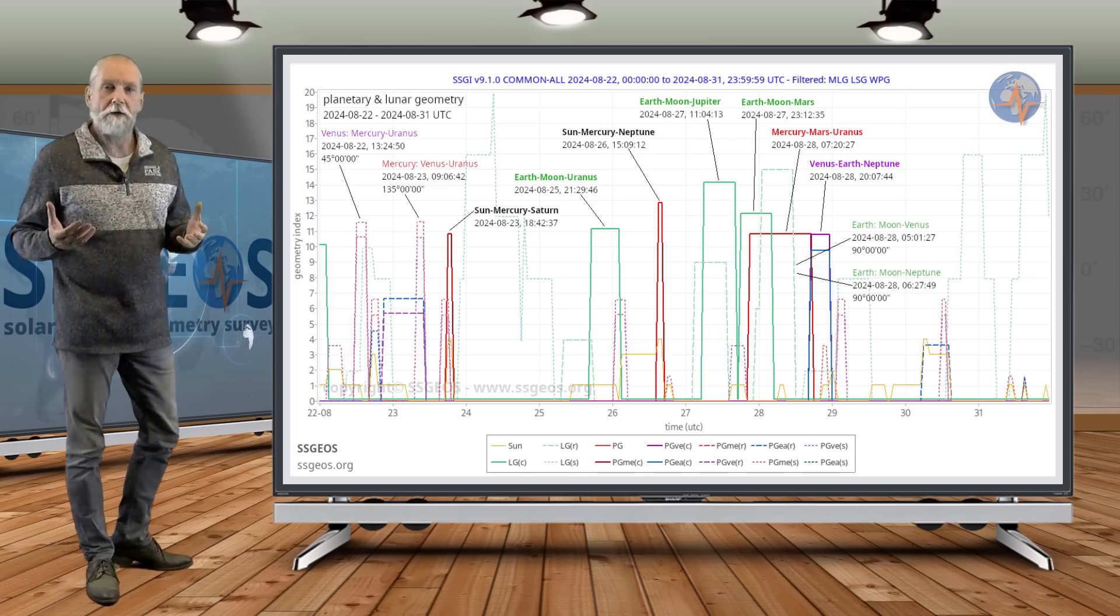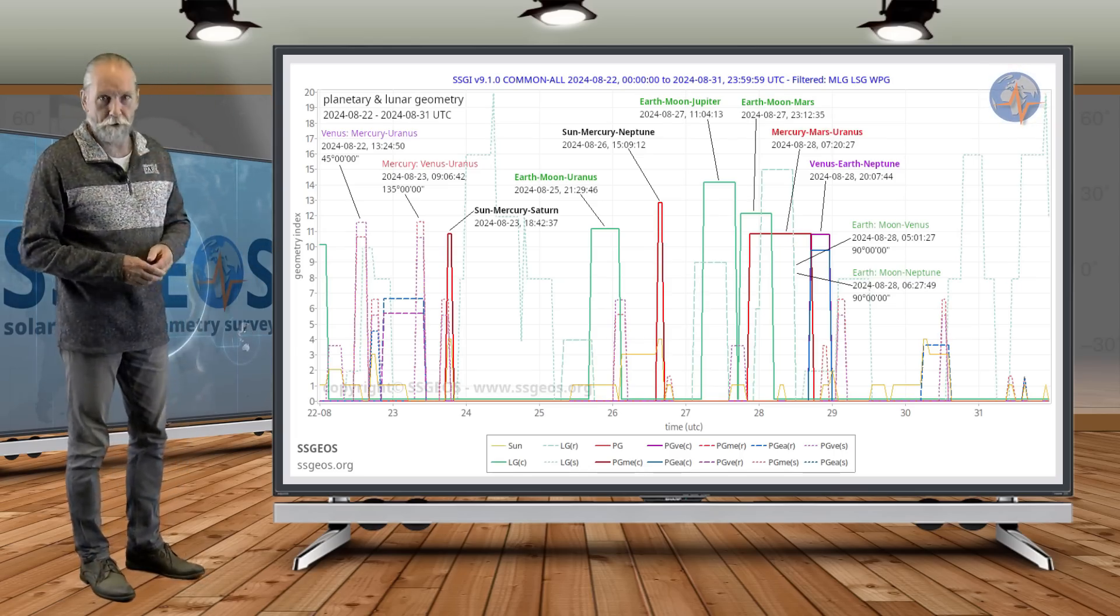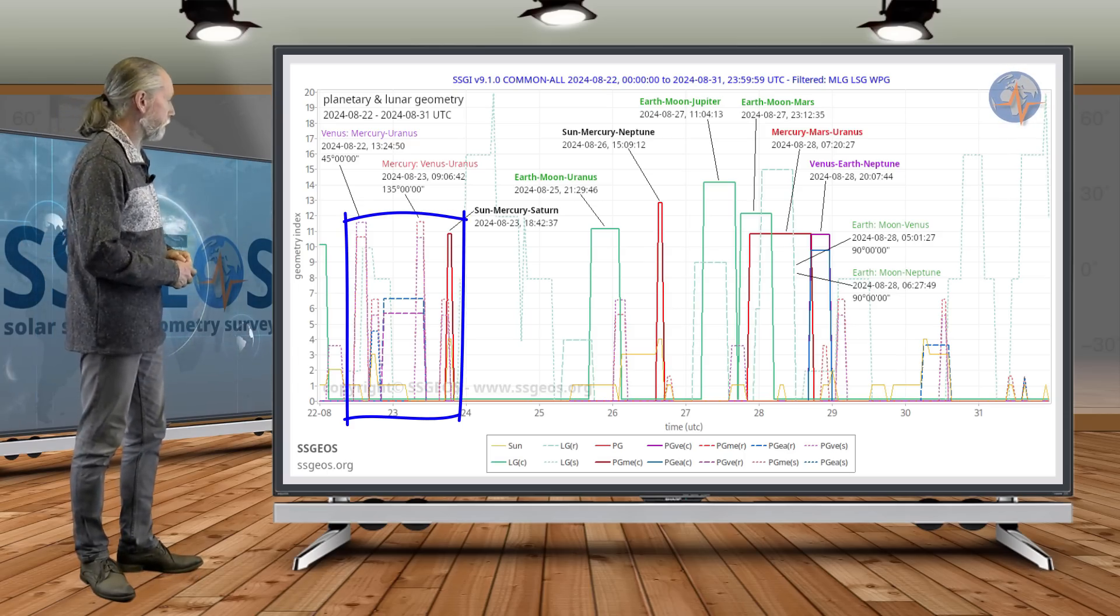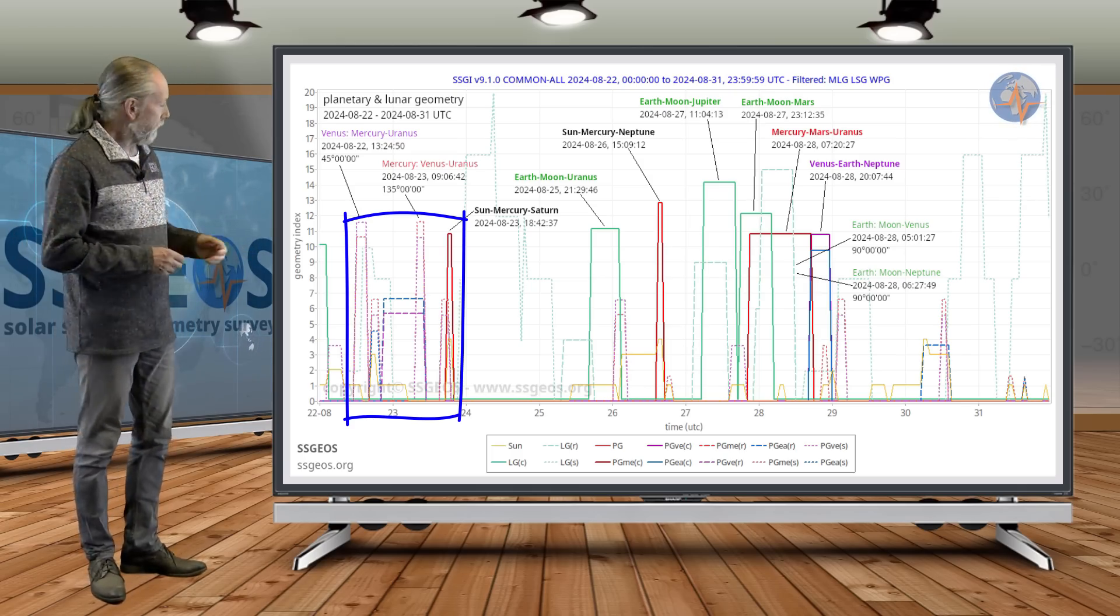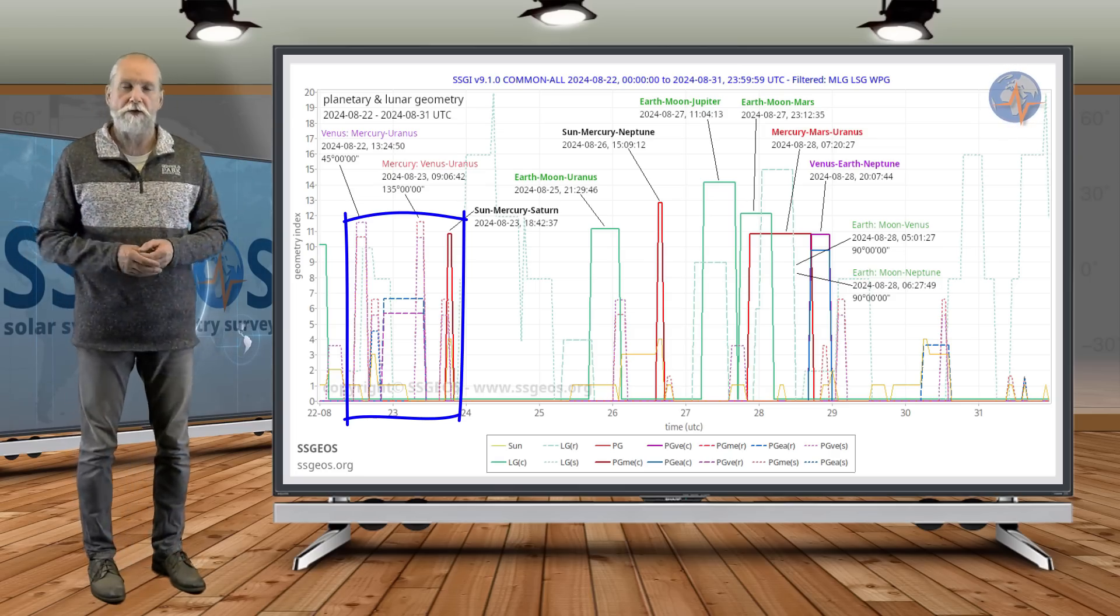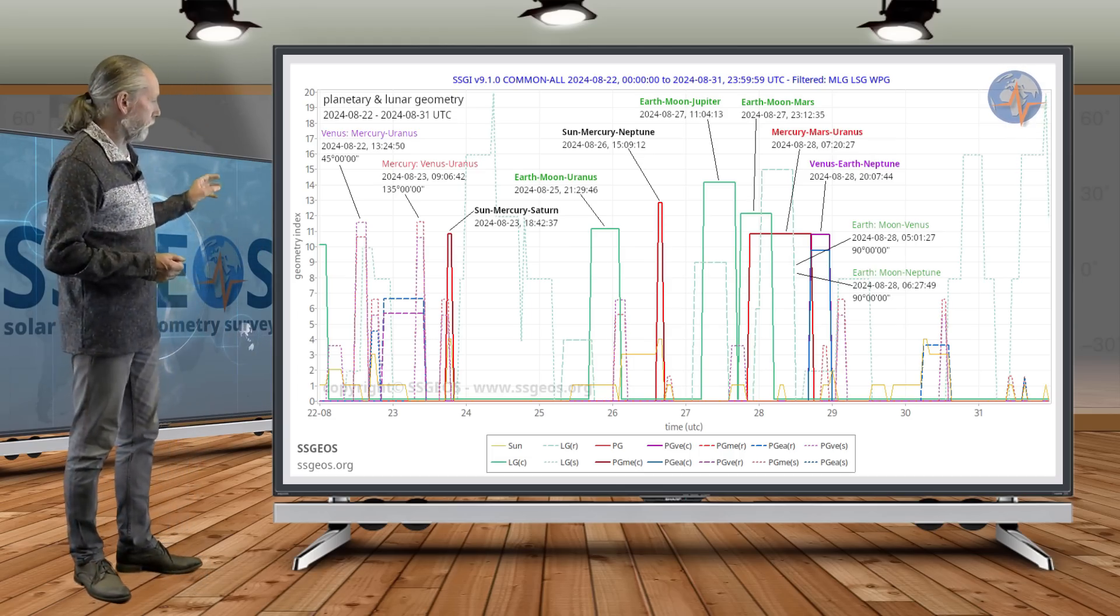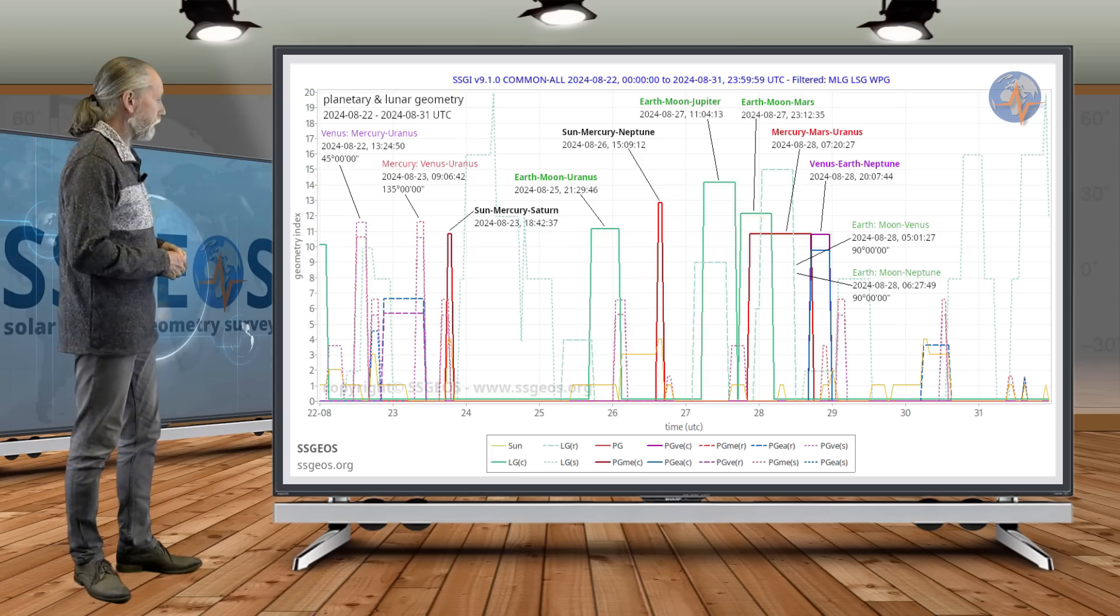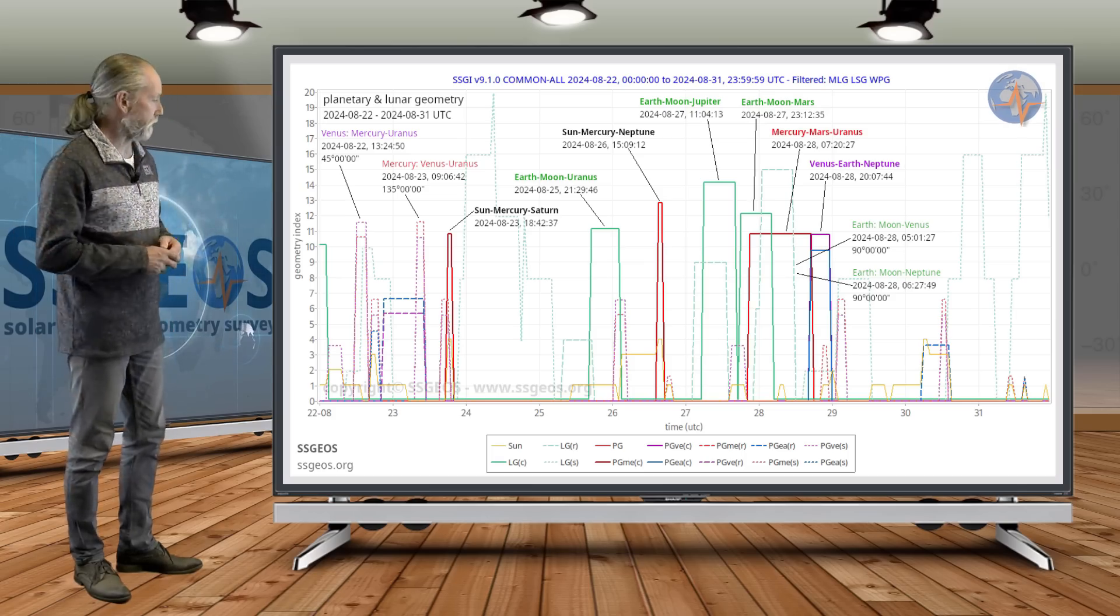So let's have a look at what we're going to have in the next time frame. This is actually from the 22nd to the 31st. We see this geometry with Venus-Mercury-Uranus and Mercury-Venus-Uranus. The semi-right angle geometry we saw that also on the previous SEGI graph, and it's followed by Sun-Mercury-Saturn. That happened yesterday and there could be some seismic response there. Magnitude 6.5 is what we see often following that kind of geometry. That could be late today, probably tomorrow around the 25th. We see a high lunar peak so there could be some seismic response there. I guess around the 25th is possible.